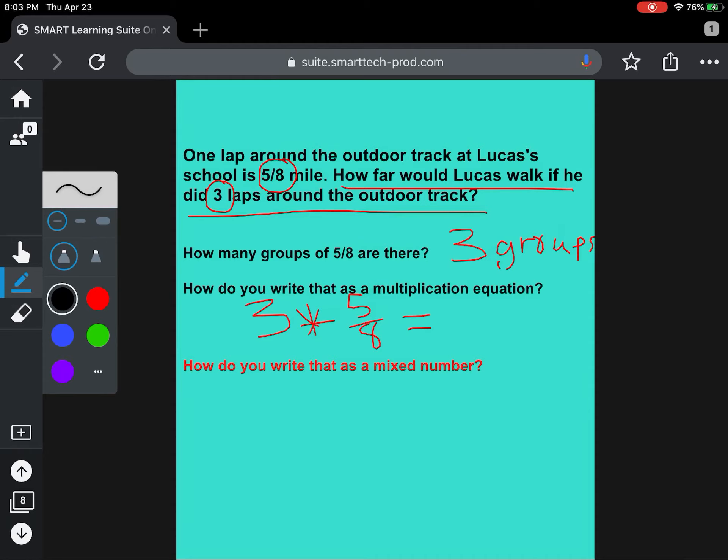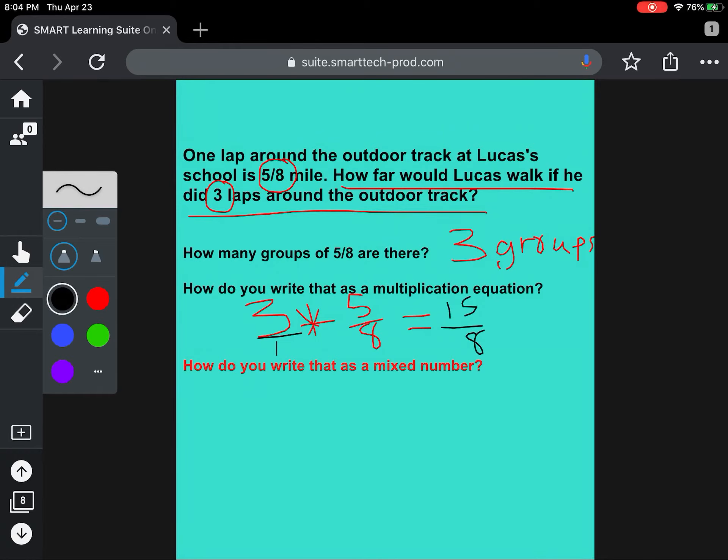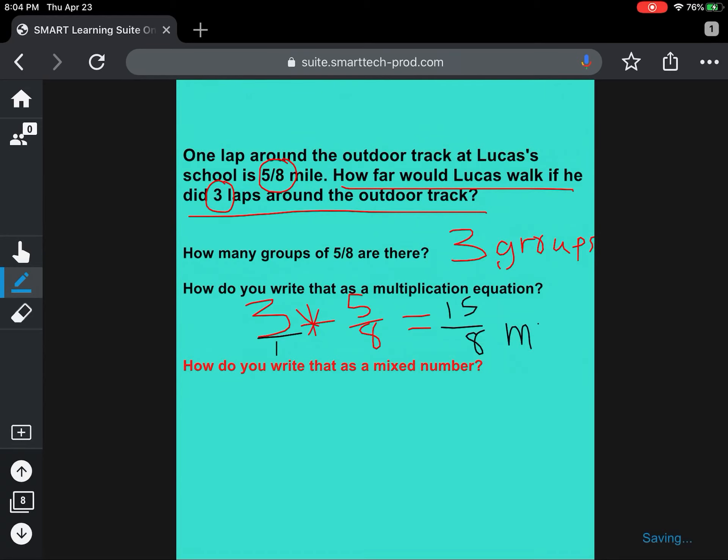If you were solving three times 5/8, you probably put the three over one, multiplied the numerators, then multiplied the denominators. Not 18, just 8. Let me fix that. So now we have that he walked 15/8 miles. Well, 15/8 is an improper fraction. So how do we write 15/8 as a mixed number?